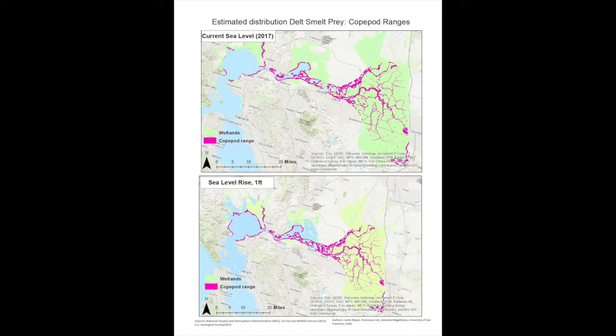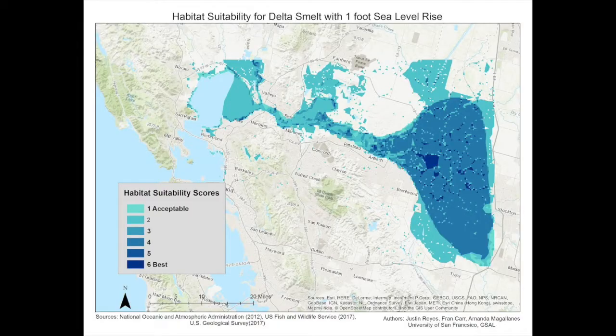We found that copepod distribution did not significantly change. Amidst wetland habitat loss at certain locations, copepods can inhabit or be adjacent to those areas regardless of wetland habitat loss. It is predicted that they will still inhabit their current distribution range in San Pablo Bay, Suisun Bay, and in the Delta in the years to come. Although copepod distribution did not significantly change, further inquiry should focus on their abundance and density in future analyses. Hence, they can still be a viable food source for Delta smelt in their predicted distribution range.